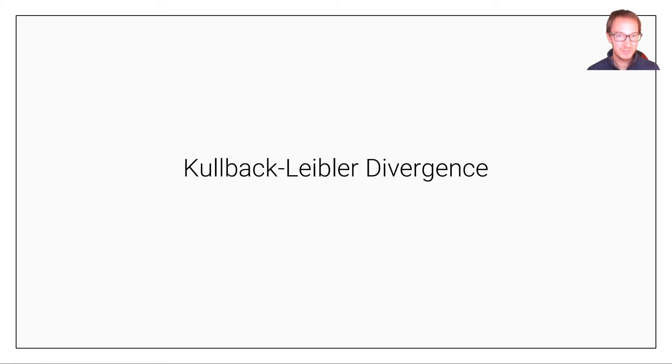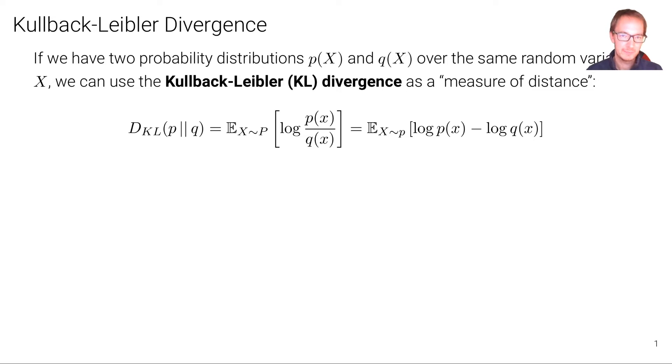We've seen how we can measure uncertainty of a distribution or the expected amount of information in a distribution. Let's now look at how we can measure distances between distributions. In particular, we're going to look at the so-called Kullback-Leibler divergence.